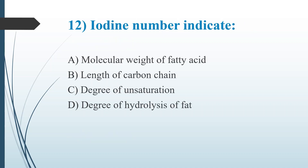Twelfth question: Iodine number indicates — Option A: Molecular weight of the fatty acid. Option B: Length of carbon chain. Option C: Degree of unsaturation. Option D: Degree of hydrolysis of fat. The answer is Option C, degree of unsaturation. Iodine number is defined as the number of grams of iodine absorbed by 100 grams of fat, and it indicates the degree of unsaturation of fat or oil.